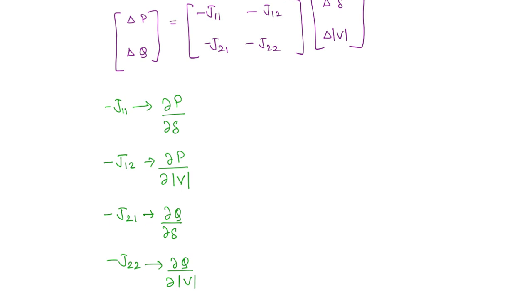So what happens in fast decoupled load flow is everything is same just like the Newton-Raphson method. The only change that we are doing is because the real power is more sensitive to changes in delta as compared to mod V. It is almost there is no change. So when there is no change what does this mean? The differentiation when you do it simply comes out to be 0 because the real power is not changing with respect to the magnitude of the voltage.